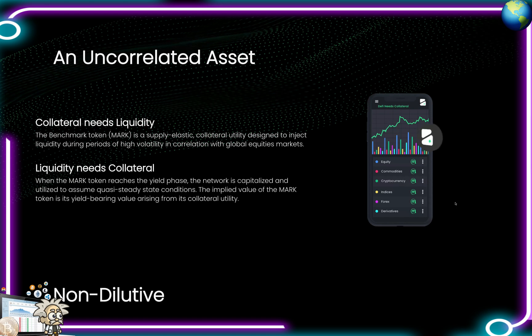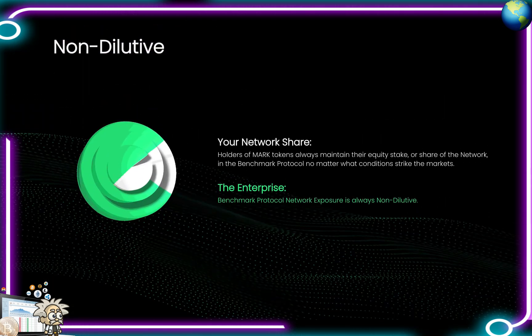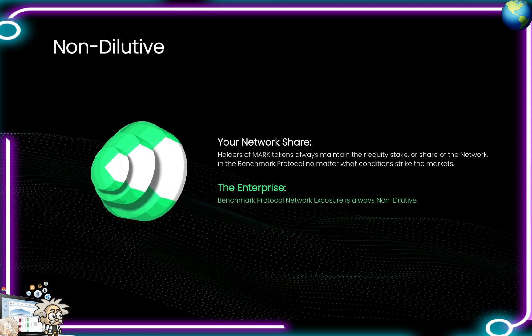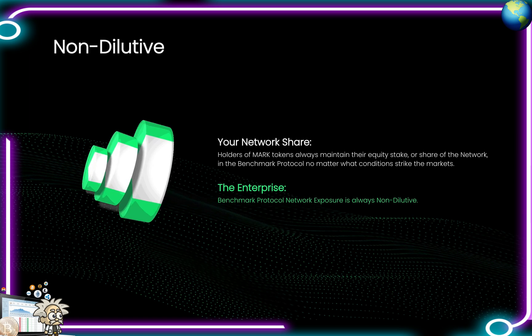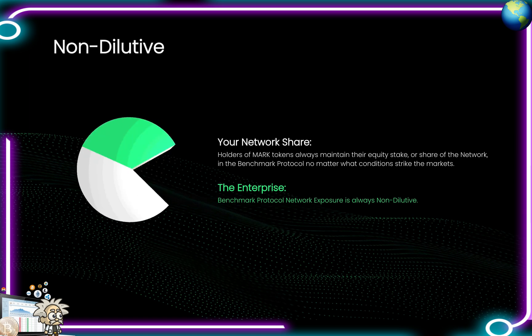The Benchmark token is a supply elastic collateral utility designed to inject liquidity during periods of high volatility in correlation with global equities markets. When the MARK token reaches the yield phase, the network is capitalized and utilized to assume quasi-steady-state conditions. The implied value of the MARK token is its yield-bearing value arising from the collateral utility. Non-dilutive network share — holders of the MARK token always maintain their equity stake in the Benchmark Protocol network, no matter what conditions strike the markets.